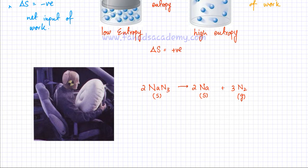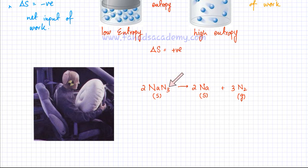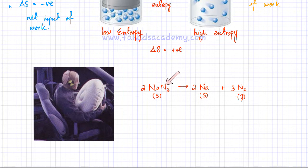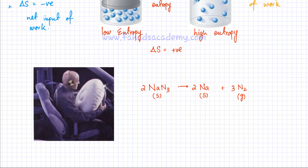To explain this further, I'll take the example of airbags in cars. These airbags cushion the impact whenever a car is in an accident. The reaction that happens when an airbag opens is that airbags contain sodium azide, which easily decomposes. When an accident occurs, it decomposes and produces sodium and nitrogen gas. A solid substance is decomposing and producing a gas, which means delta S is positive and disorder is increasing because gas is being produced.